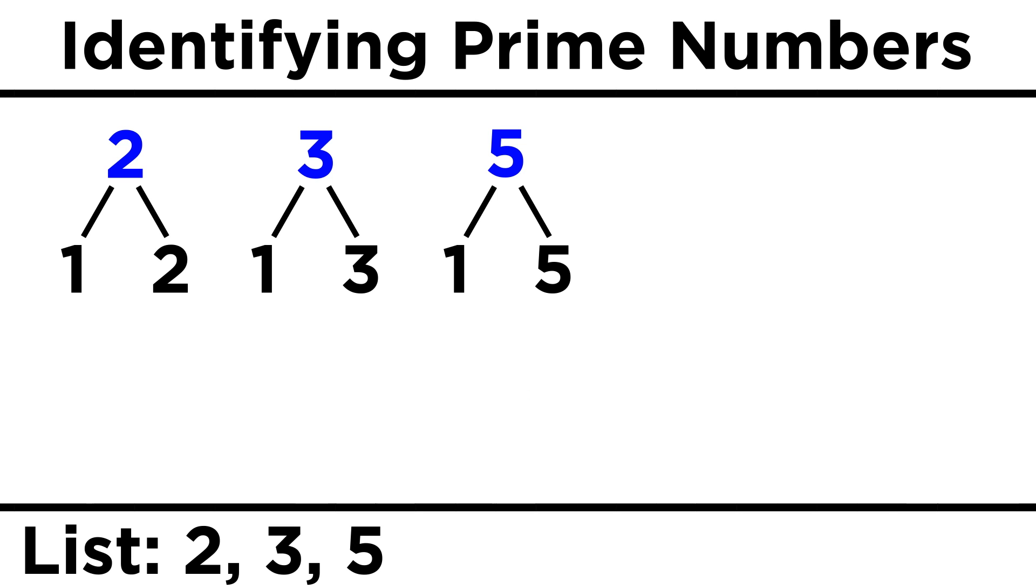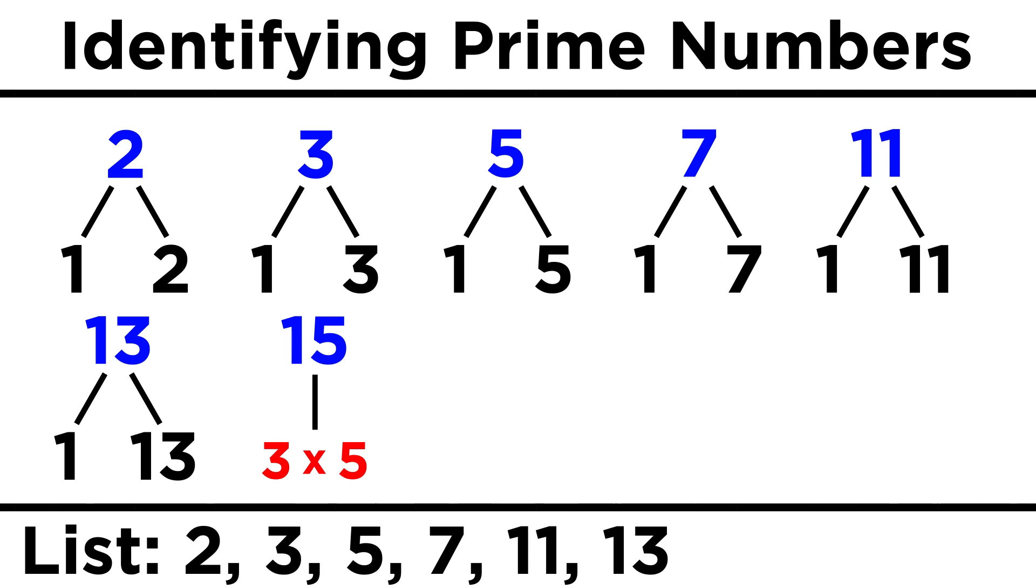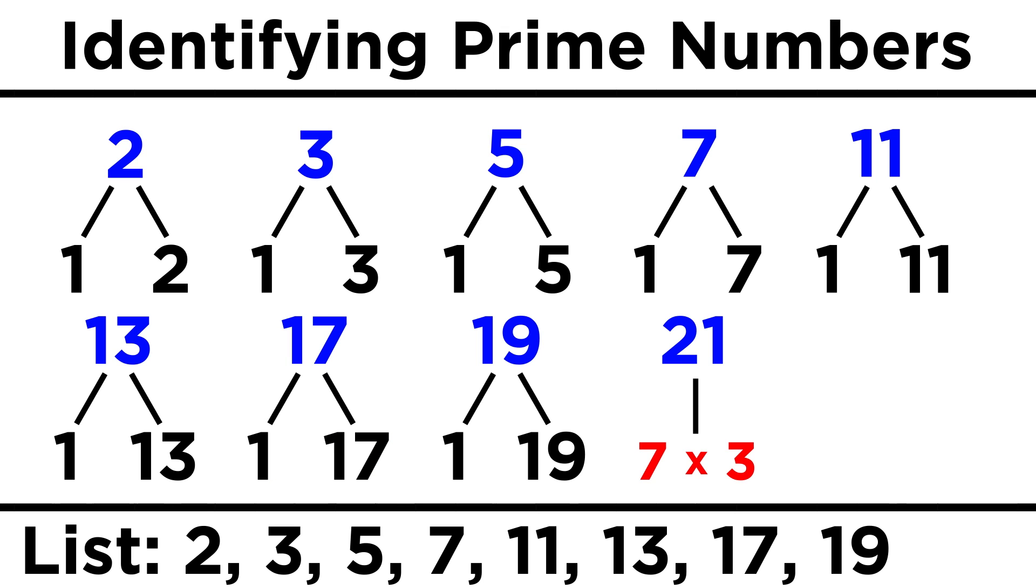Five is a prime number, as is seven, but nine is not, because it is divisible by three. Eleven works, as does thirteen, but not fifteen, since that's the product of three and five. Seventeen works, and so does nineteen, but not twenty-one, since that's seven times three. Twenty-three works, and so on.